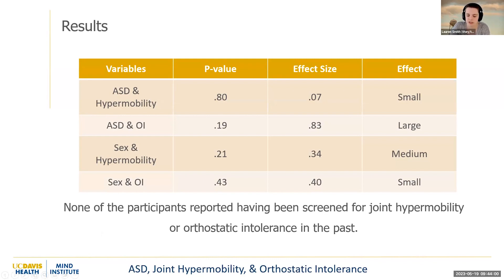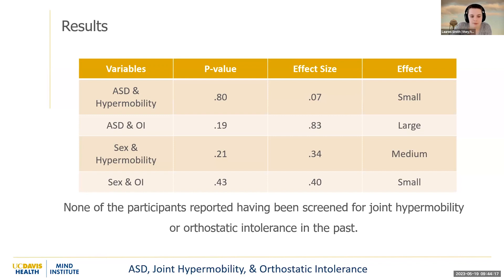I thought it was still important to highlight the strength of the relationship between the variables. Between autism and orthostatic intolerance, we found a large relationship — a pretty strong relationship — as well as a relationship between sex and hypermobility. Interestingly, none of the participants reported having been screened for joint hypermobility or orthostatic intolerance in the past.